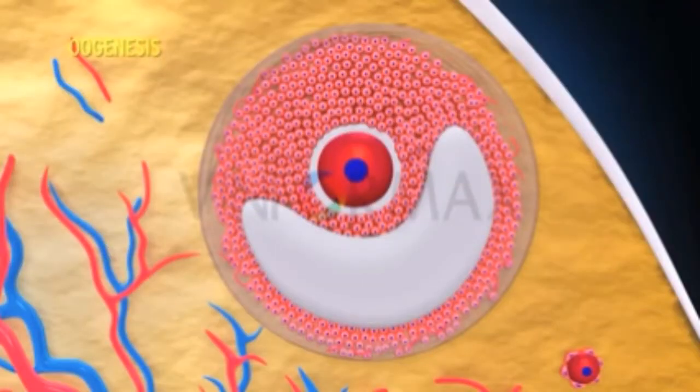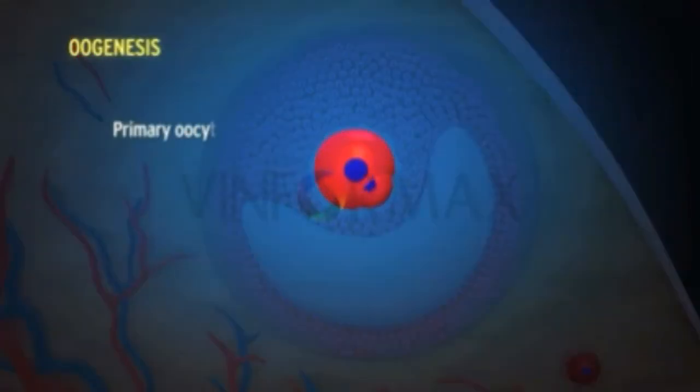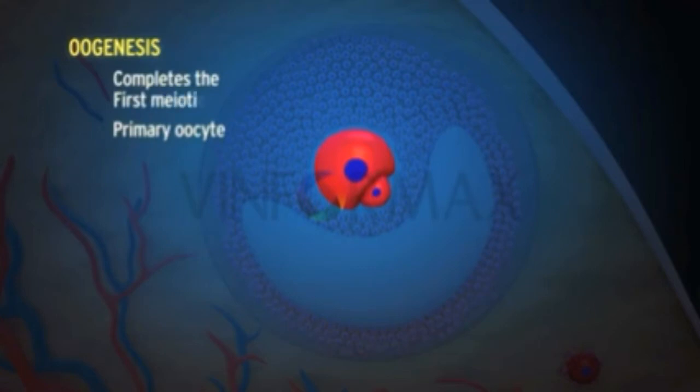At this stage, the primary oocyte completes the first meiotic division to form the secondary oocyte and the first polar body.